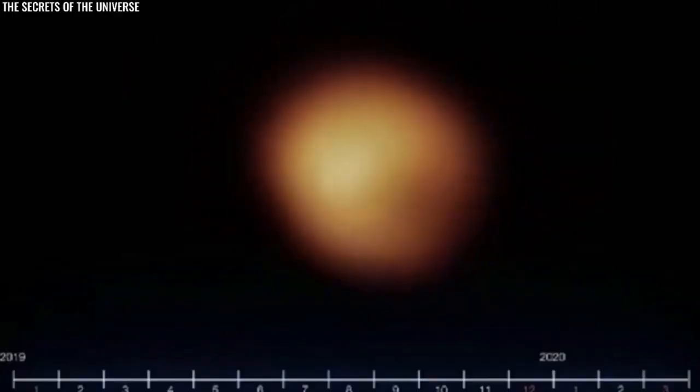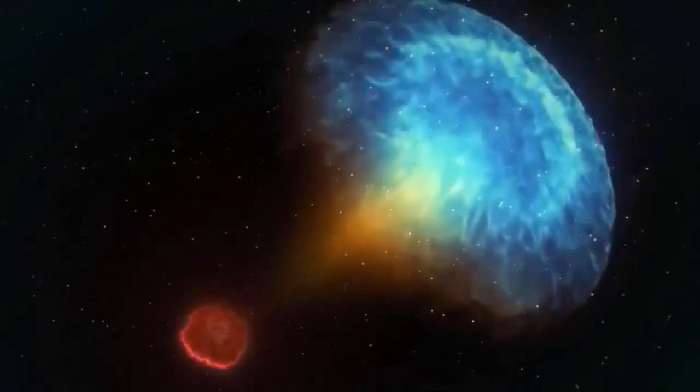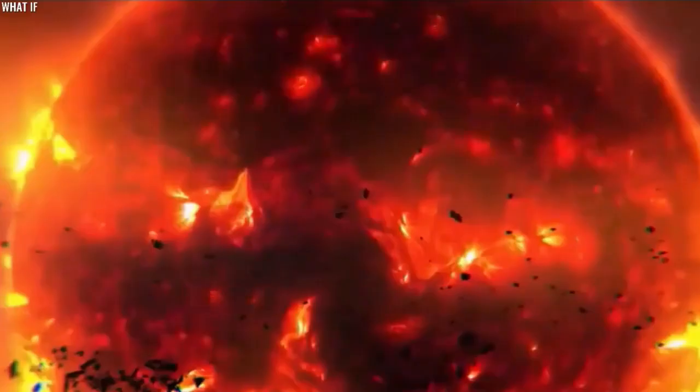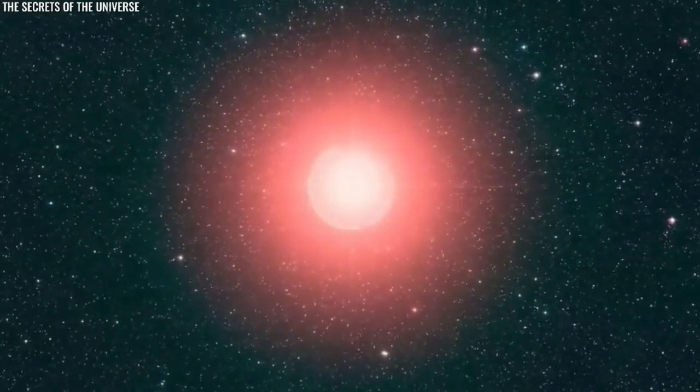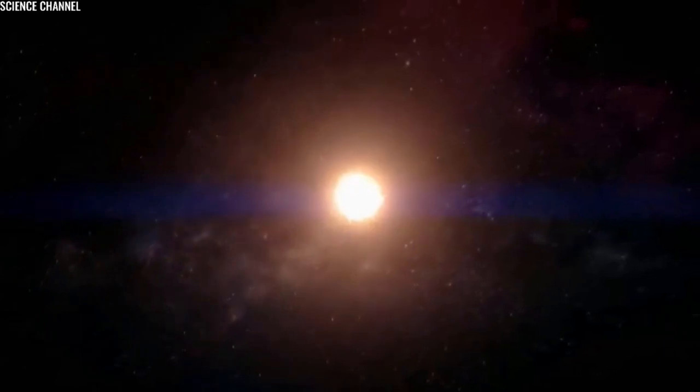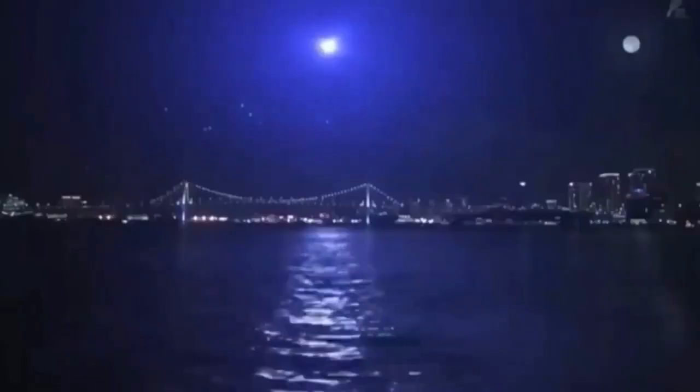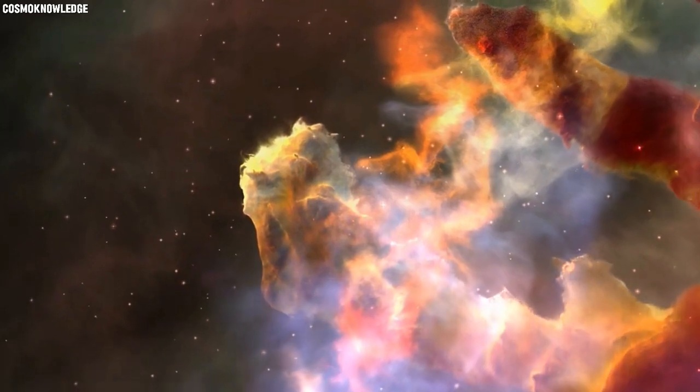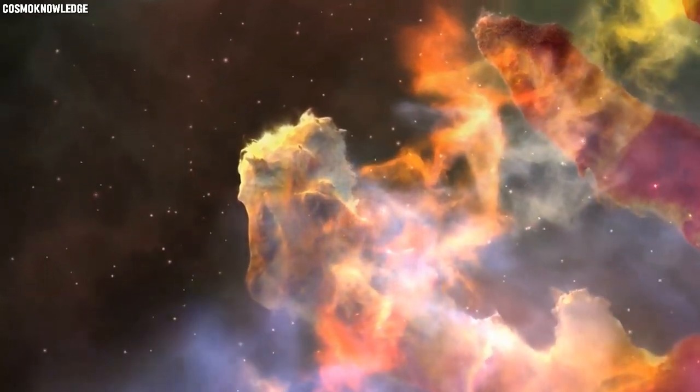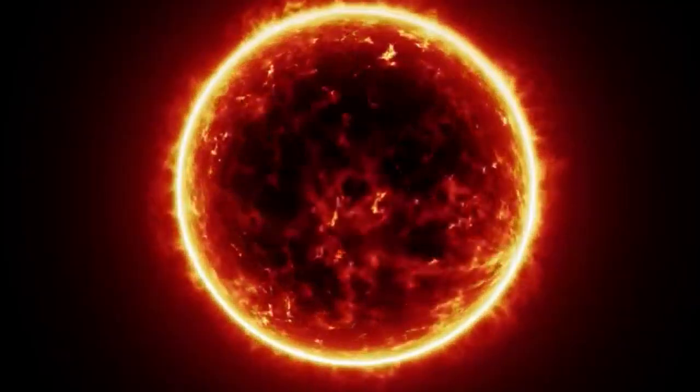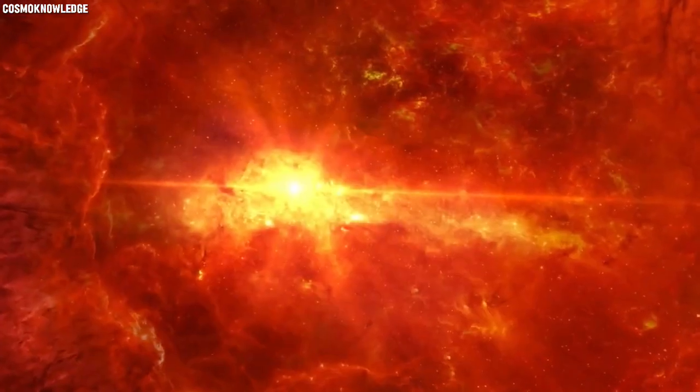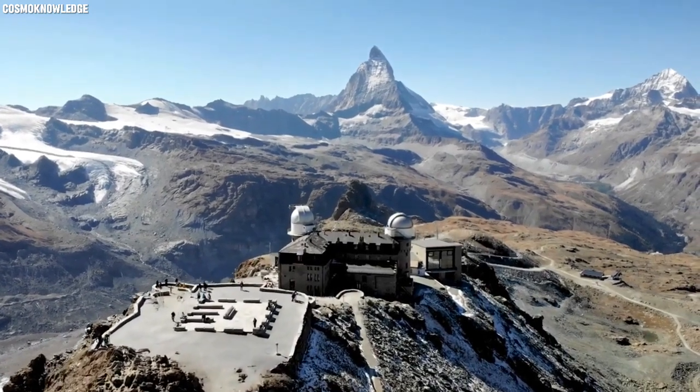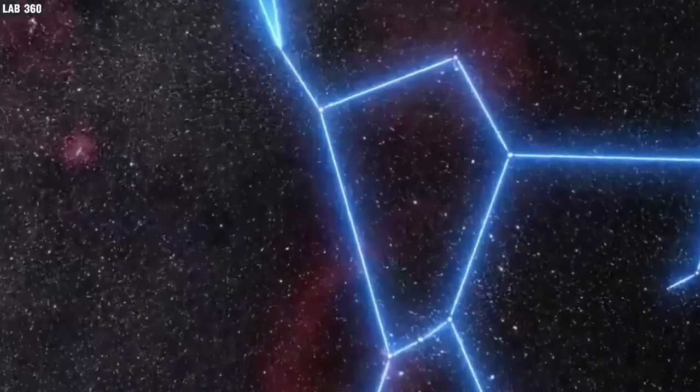Betelgeuse, a brilliant crimson supergiant star, has held astronomers and cultures across the globe spellbound for centuries. In the Orion constellation, Betelgeuse stands out with its unmistakable reddish hue. This colossal celestial entity ranks among the largest stars visible to the unaided eye, boasting a diameter roughly 900 times that of our own sun. Its imposing presence is such that if Betelgeuse were positioned at the heart of our solar system, its immense size would engulf the inner planets completely, extending its fiery reach far beyond the orbit of Mars. The sheer scale of Betelgeuse's magnitude serves as a humbling reminder of the vastness and grandeur of the cosmos, captivating observers with its awe-inspiring radiance and profound astronomical significance.